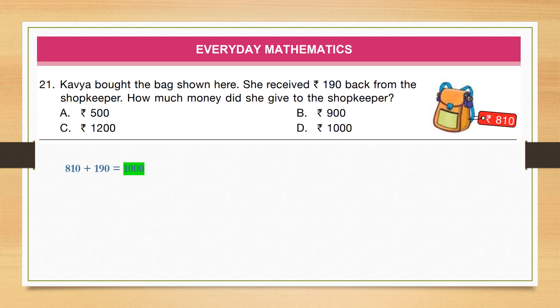Now we are in the everyday mathematics section. Question number 21: Kavya bought a bag shown here. She received Rs. 190 back from the shopkeeper. How much money did she give to the shopkeeper? Total amount = bag price plus amount returned: 810 plus 190 equals 1000. So she gave Rs. 1000 to the shopkeeper. Correct answer is option B.